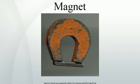Materials that can be magnetized, which are also the ones that are strongly attracted to a magnet, are called ferromagnetic. These include iron, nickel, cobalt, some alloys of rare earth metals, and some naturally occurring minerals such as lodestone.